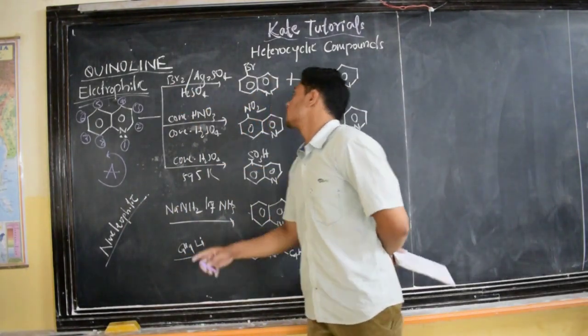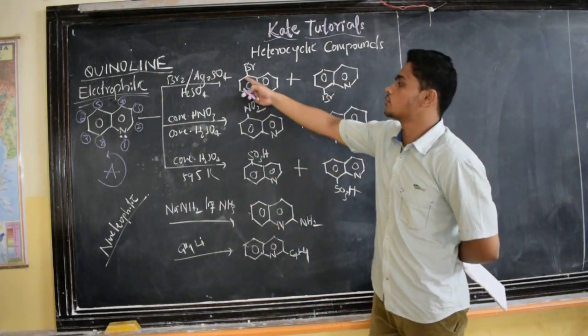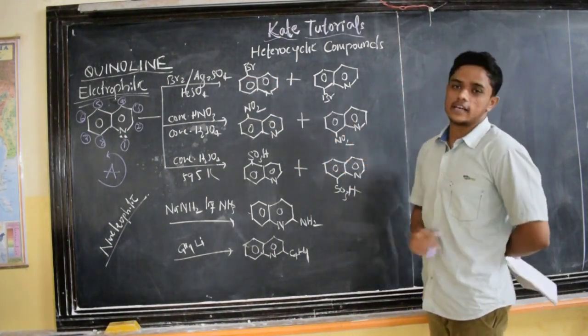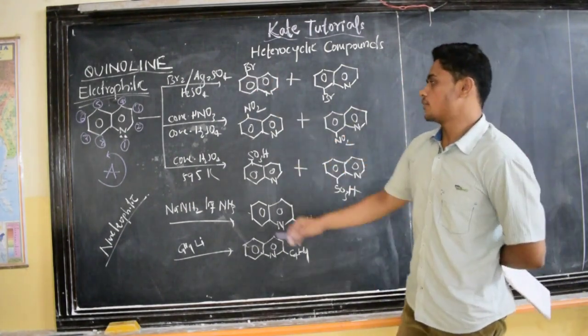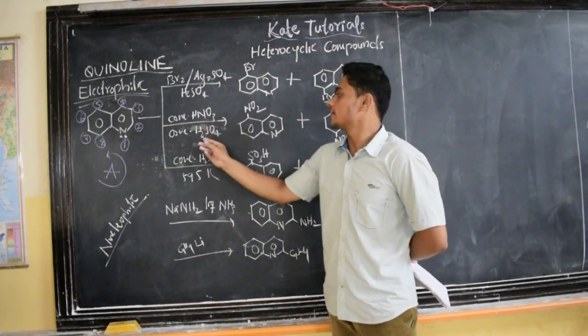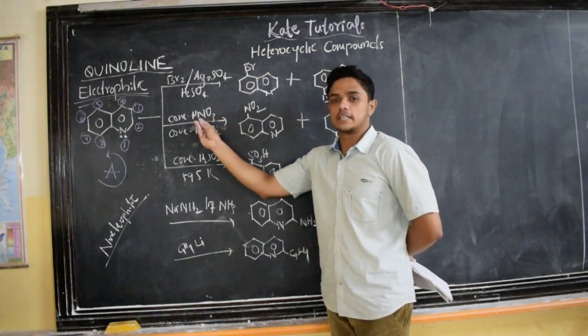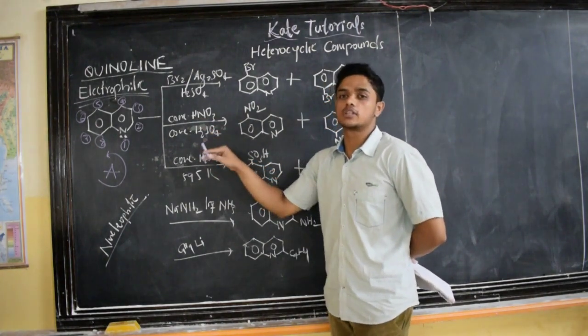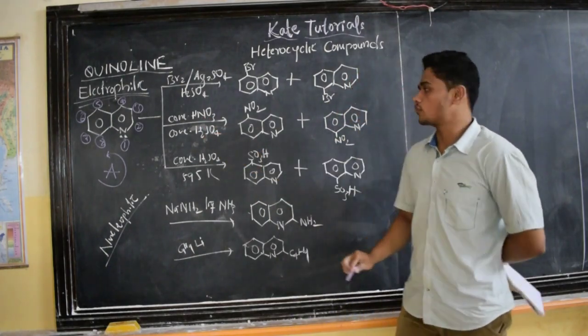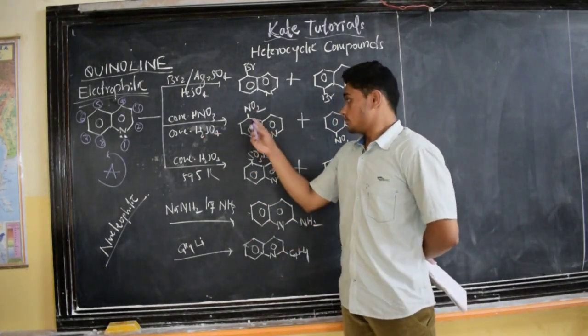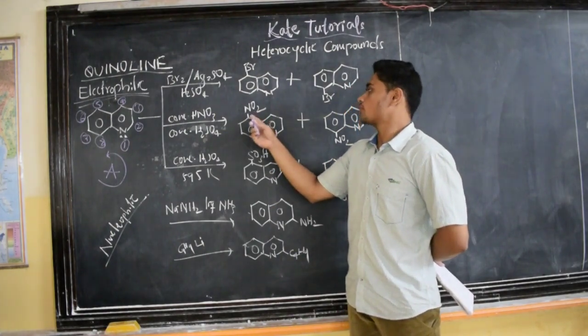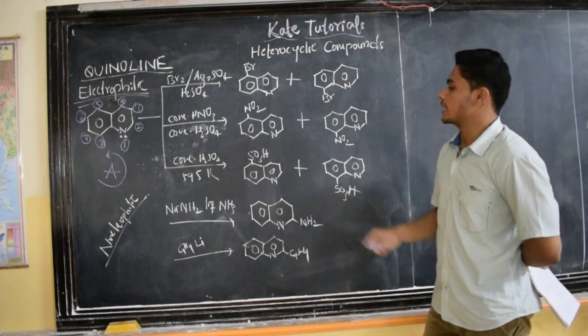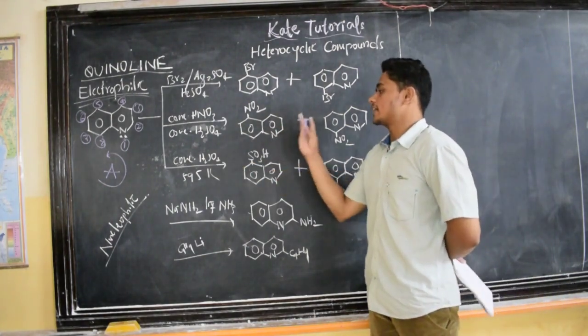When we do bromination, the bromine attacks at 5th position or at 8th position, giving 5-bromoquinoline and 8-bromoquinoline. If we do nitration using nitrating mixture—1 to 3 ratio of HNO3 and H2SO4—we get NO2 group. Since it acts as electrophile, it attacks at 5 and 8th positions, giving 5-nitroquinoline and 8-nitroquinoline.